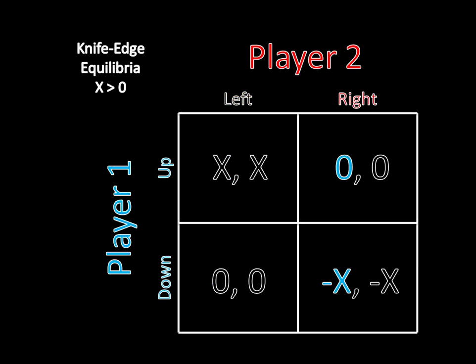And likewise, if player 2 is going right, then you're still going to want to go up because going up gives you zero, and going down gives you negative x. x is a positive number here, so negative x is negative, which means up is better for you than down, which means up is better for player 1 regardless of what player 2 does when x is greater than zero.